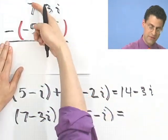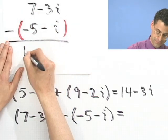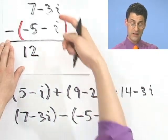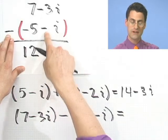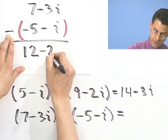So I see 7 minus minus 5, that's 7 plus 5, which is around 12. That's the real part. Now what about the imaginary part? Here I have minus 3i's and here I have a minus and minus, which is a plus i. If I have minus 3i's and I have a plus i, that gives me a minus 2i.